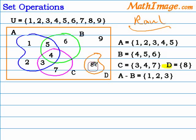Set D has only element 8. And notice here that we have only one element, 9, not in any of the sets. We're looking at also the subtraction of set B from set A. Notice that elements 4 and 5 have been taken away from set A in the subtraction.